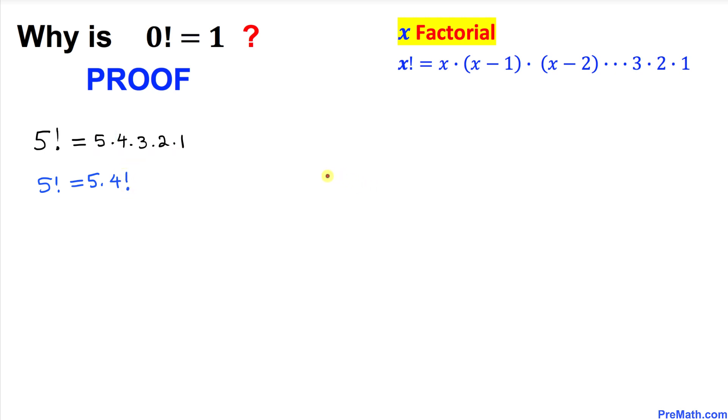So 7 factorial once again we know that 7, 6, 5, 4, 3, 2, and 1. So this 7 factorial could be written as this 7. Write it down over here times this thing, the whole part. This second part could be written as 6 factorial. Isn't it? So I can write 6 factorial. So just keep in your mind.